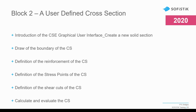First, we are going to draw the boundary of the cross-section. Then we are going to define the reinforcement within this cross-section. Next, we are going to define the stress points of the cross-section. Then we are going to define the shear cuts within the cross-section. And finally, we are going to calculate and evaluate this cross-section. I think it's going to be quite interesting, so let's get started.